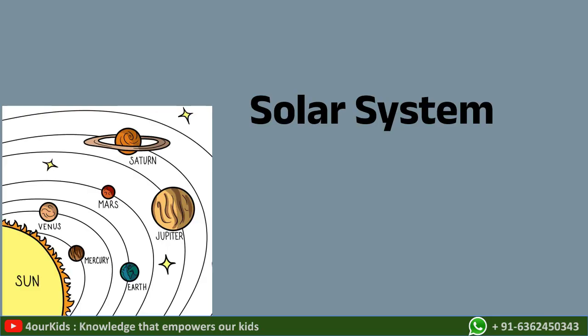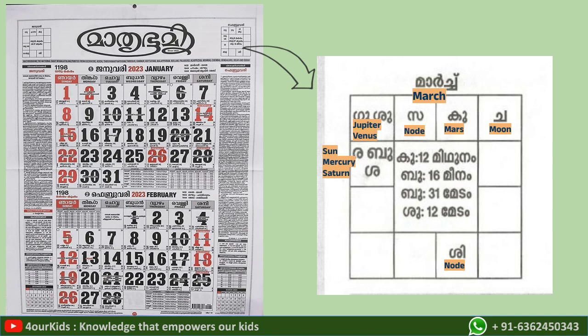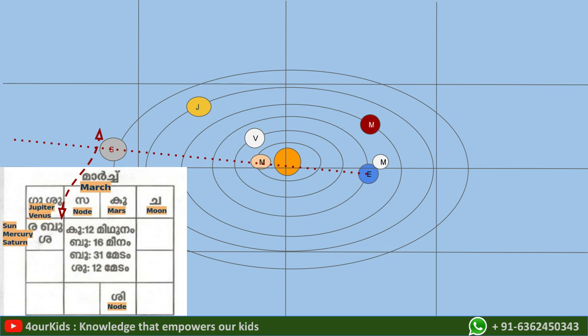Some calendars also show the solar system. This is specifically the Kerala calendar. On the top there are two squares, and I have magnified the square for the month of March. There are Malayalam alphabets with corresponding English translations. We have 12 small squares on the periphery representing the various zodiac constellations. This picture in the calendar is representing the solar system.